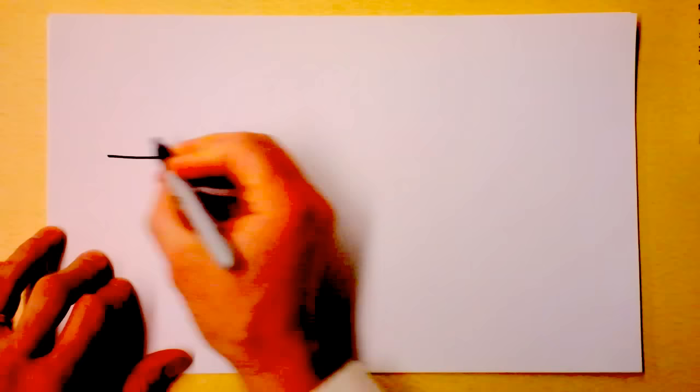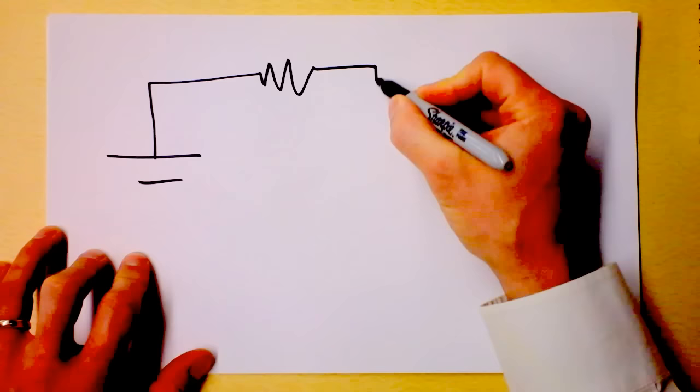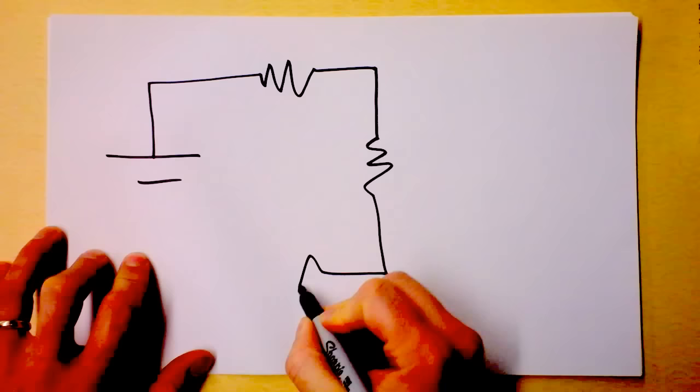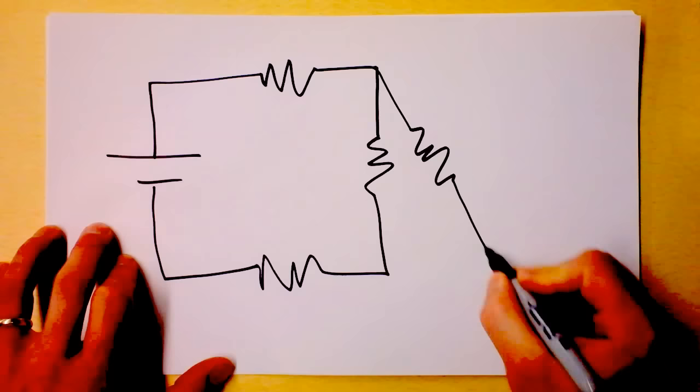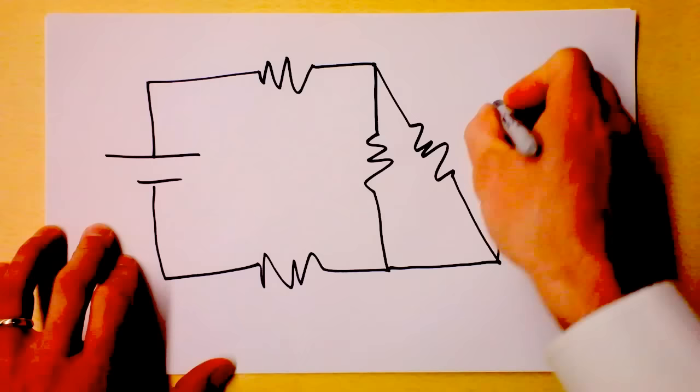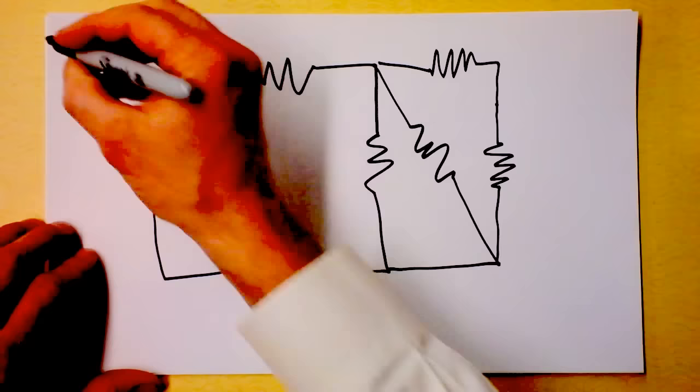So some guy comes up to you in a dark alley and he says, hey kid, you want a dollar? And you say, sure. And he says, well get me the current going through every one of these resistors. So he draws the following circuit diagram for you. I mean, the problem posed by the strange guy on the street who's going to give you a dollar if you get it right.